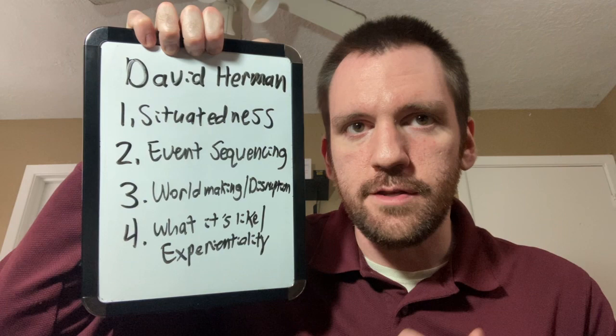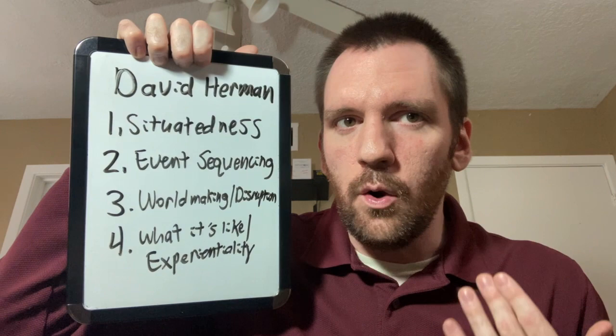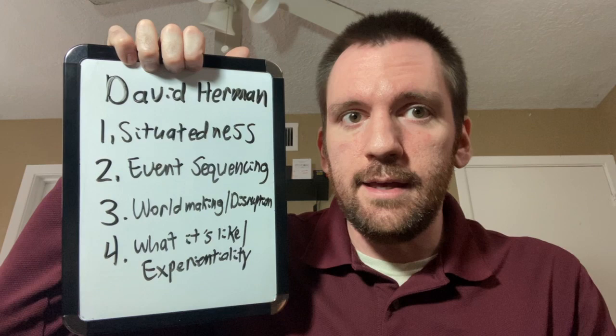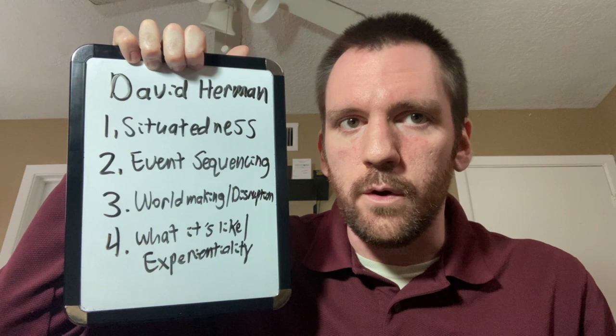In a similar vein, we have the cognitive narratologist David Herman and his four basic elements of story. Situatedness. How is the story being told to what audience in what way on what medium? The event sequencing. In what order are the events told, which will affect our perception of the story as an audience? The world-making and world disruption of the story. How do we establish a story world, the settings, and the characters? Then how can we disrupt that story world to create story events?